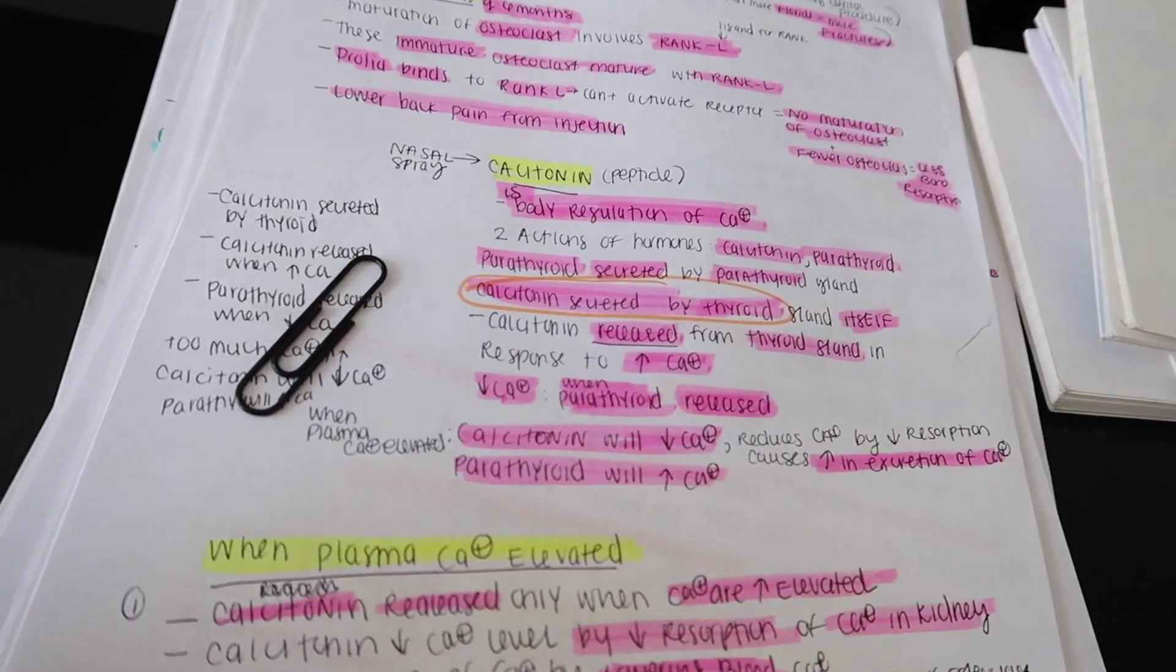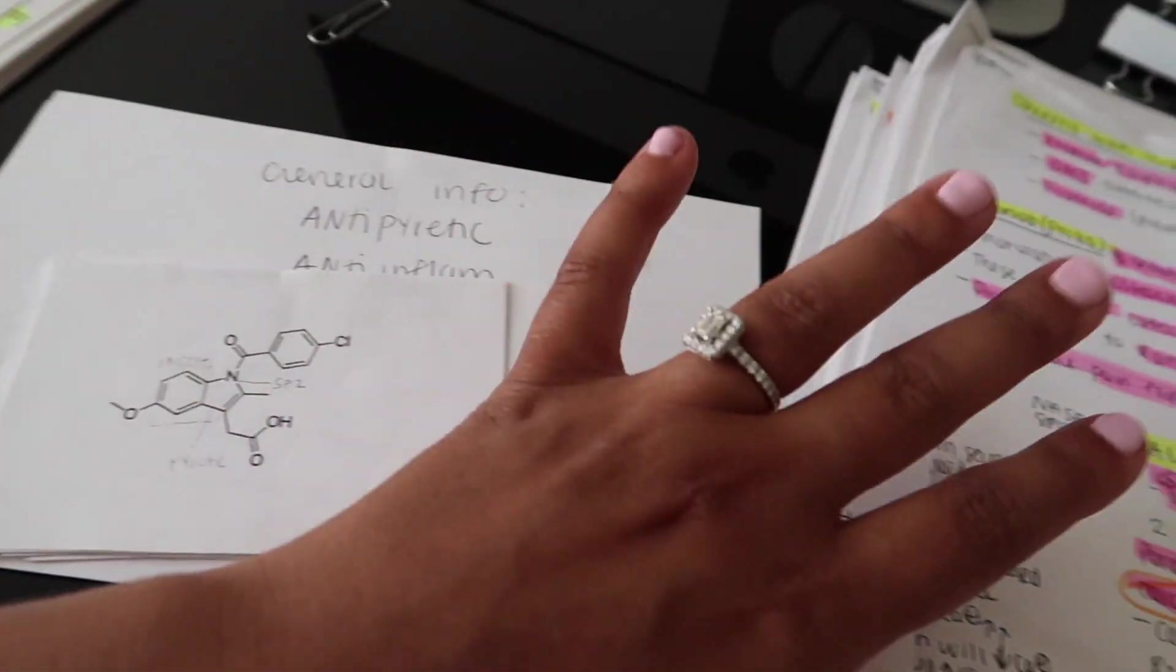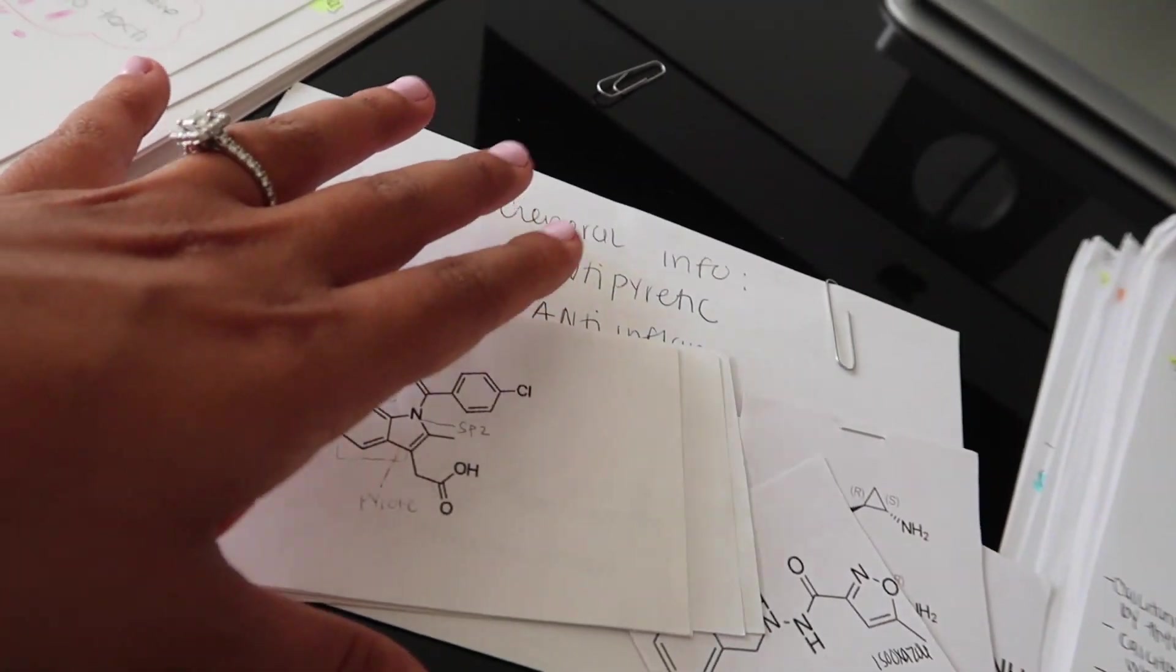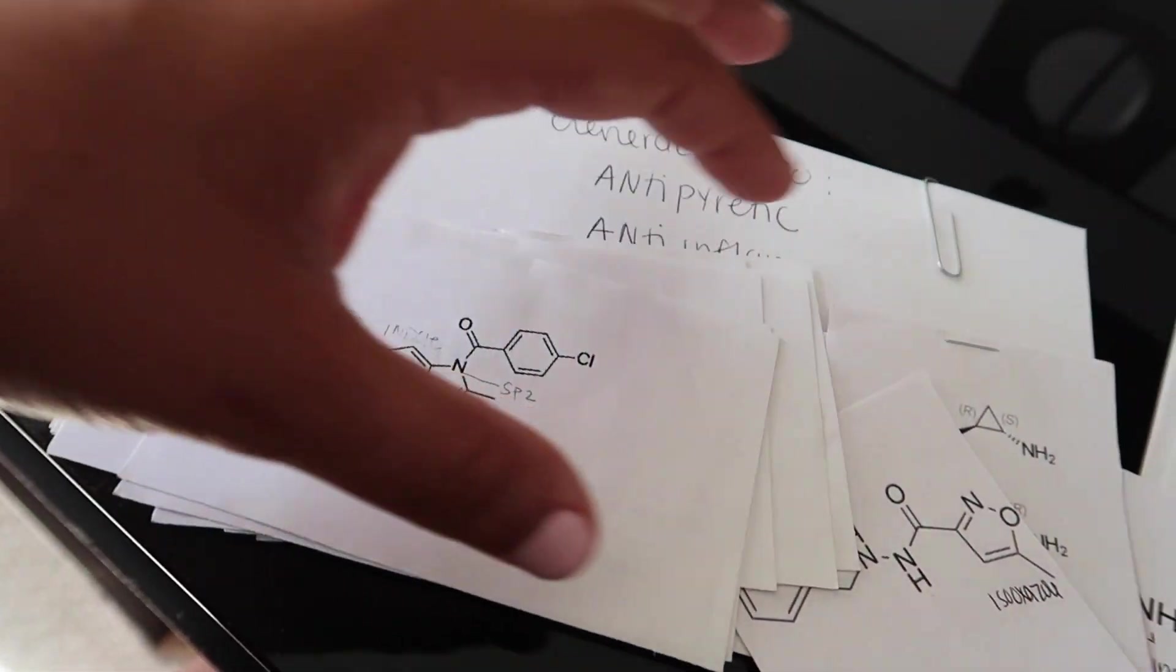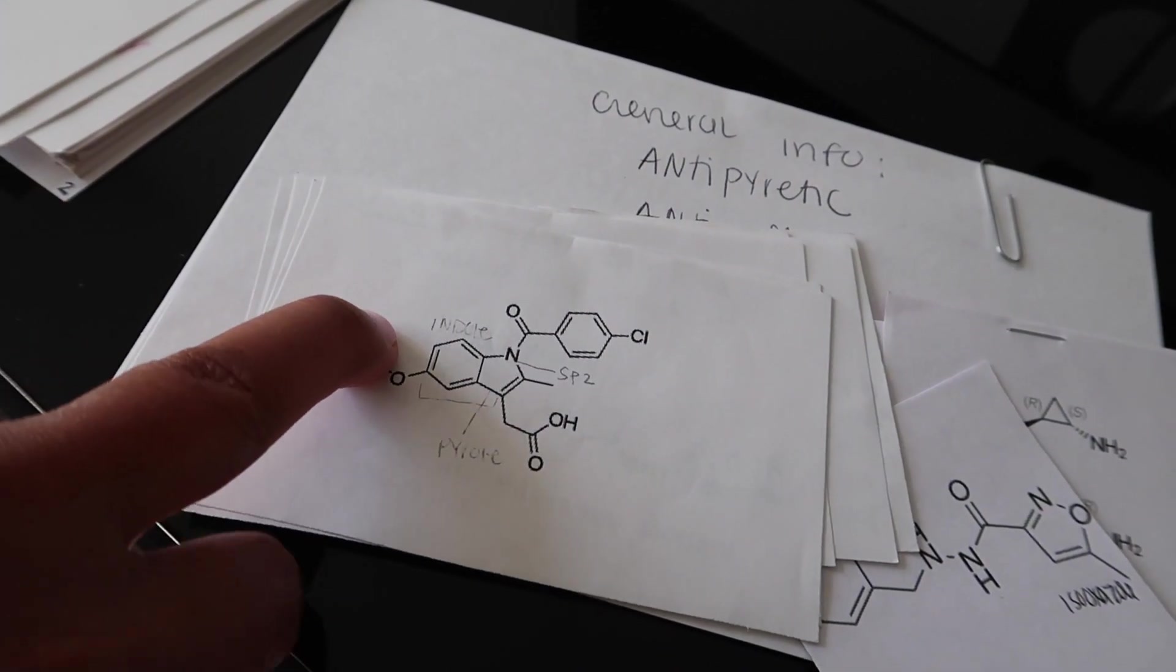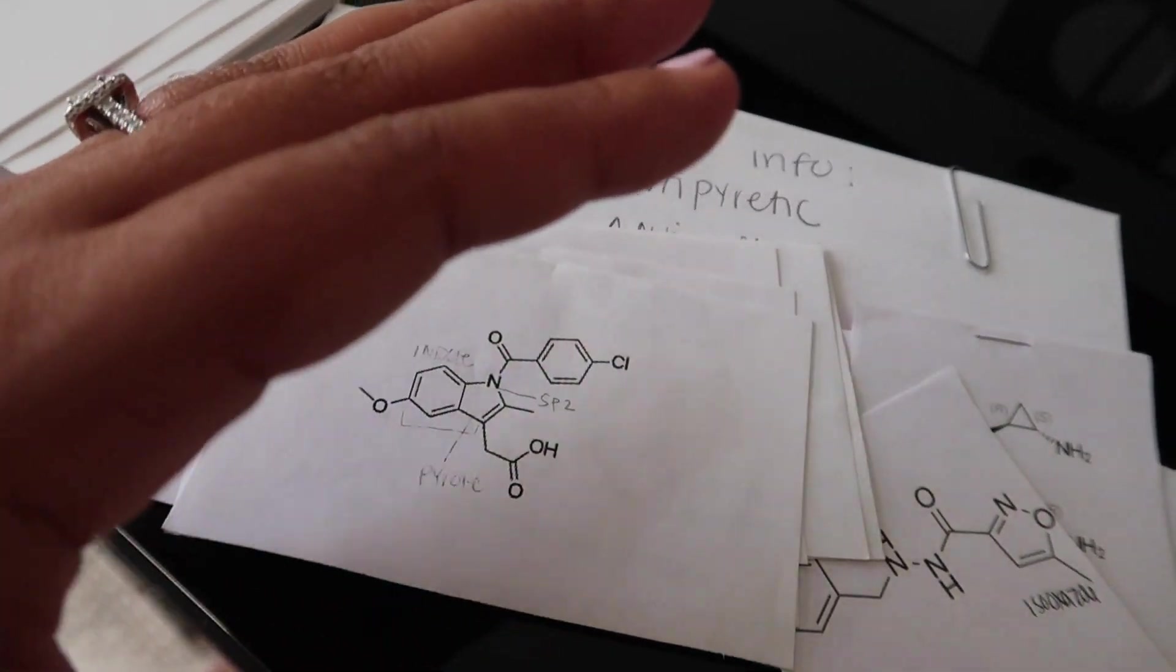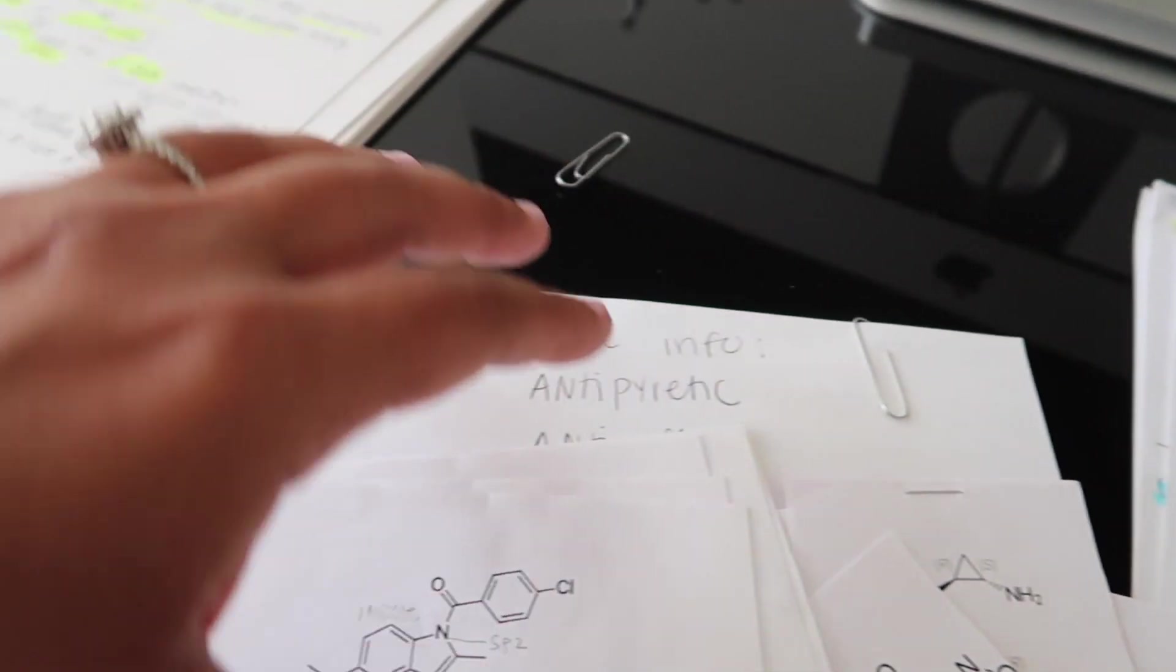So how I study medicinal chemistry is I would write down the lecture on a white piece of paper like I did here. Write down everything the professor was saying, draw the drug structure with the drug name, and then I would write its key points, its bullet points, how it's metabolized, where it's protein binding, if it's SP2, if it's acidic or not, everything important about the drug. What it does, its indication, all of that stuff. From that paper, I would transfer it over.